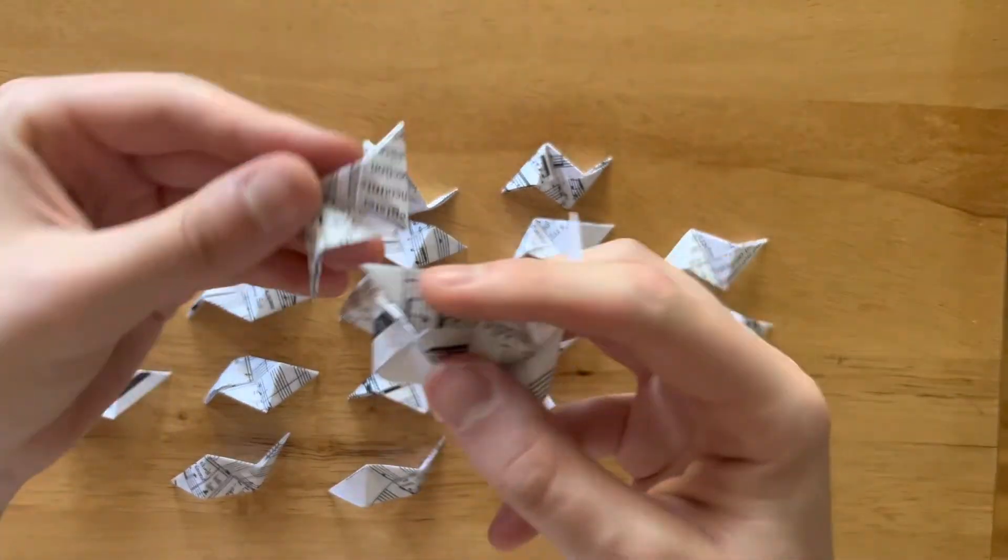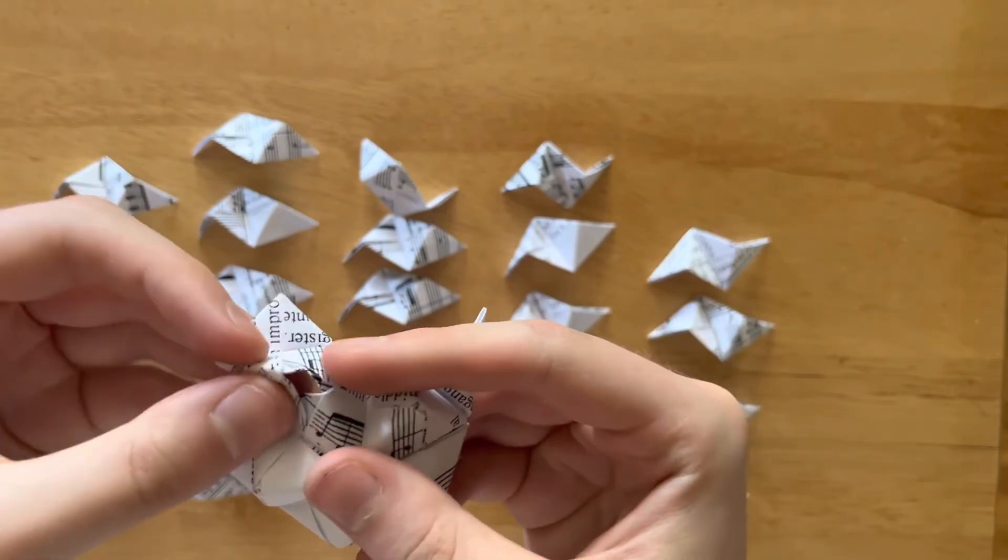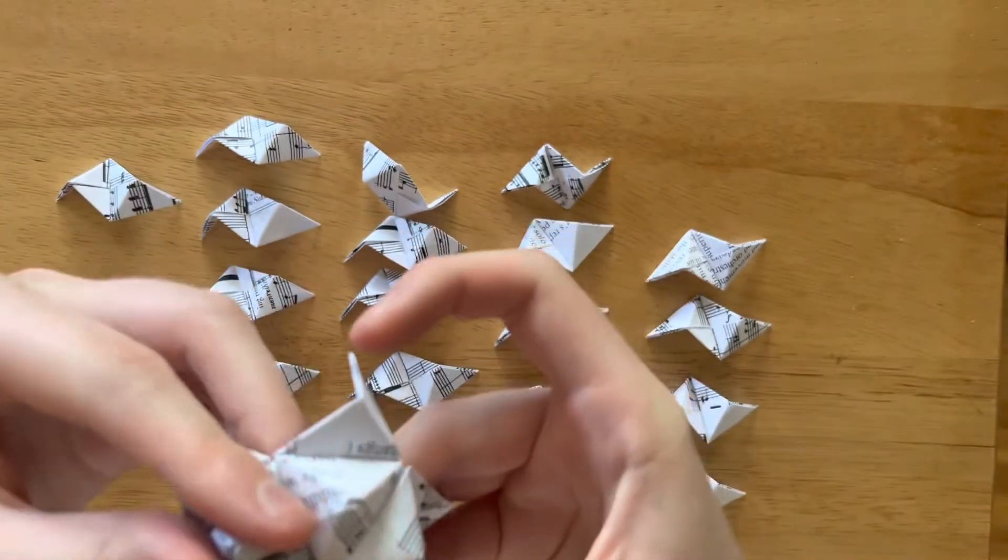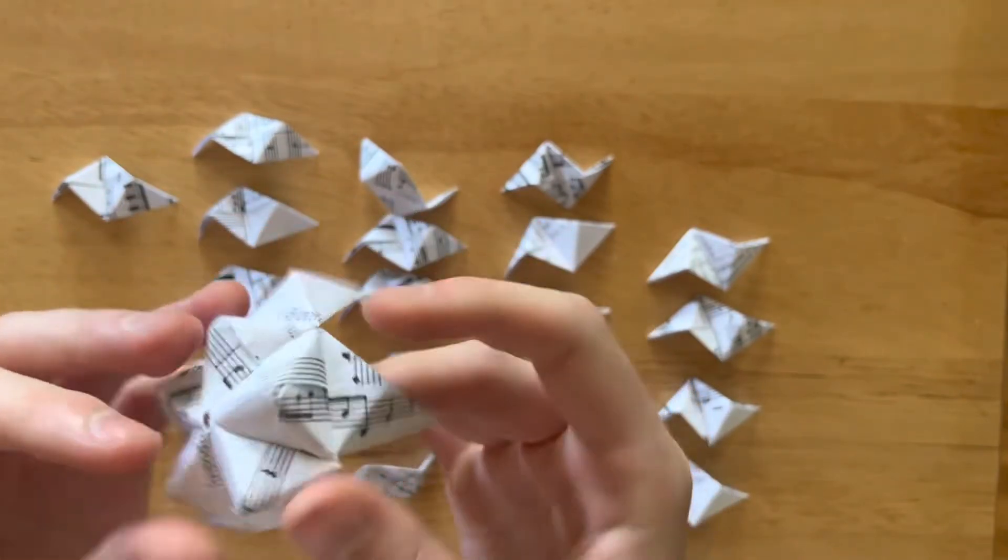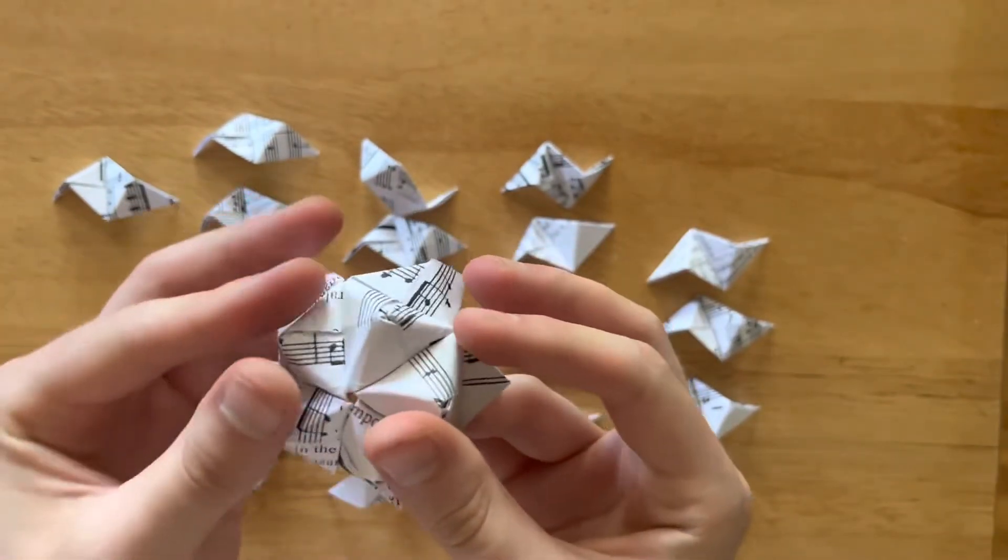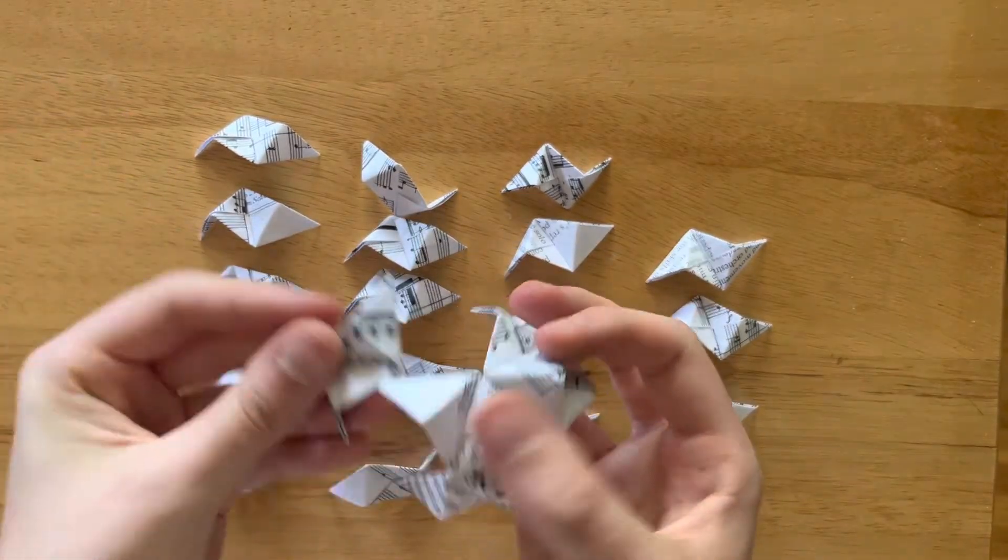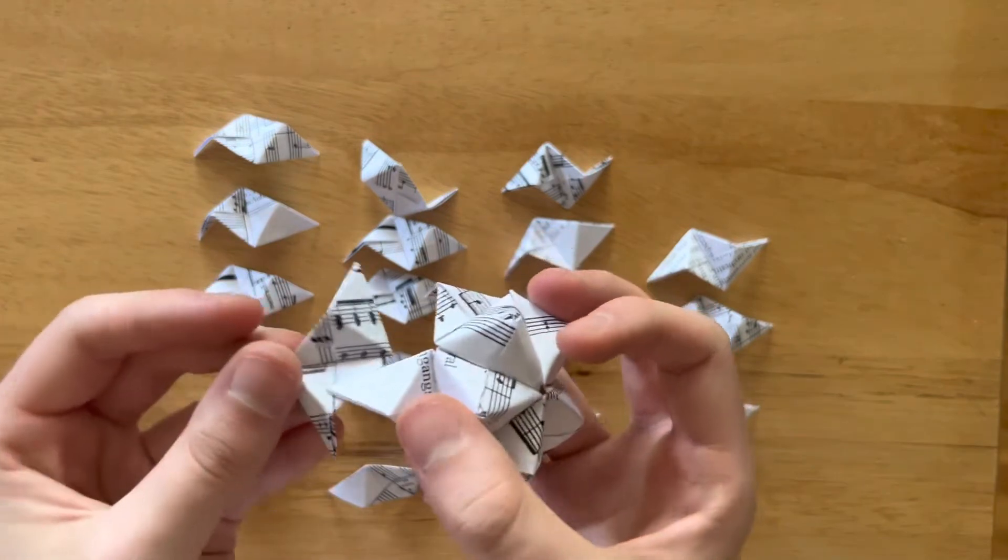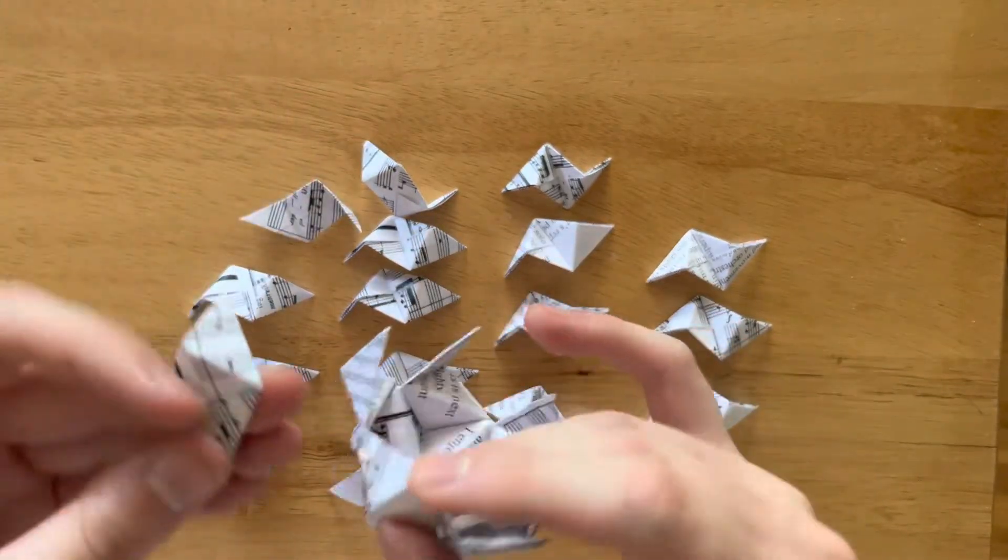And now we need one final piece to complete our first group of five. There you go. Now just keep going like this to complete this. Just keep making groups of five. And so see here, we already have two. So we just need three more points on this group.